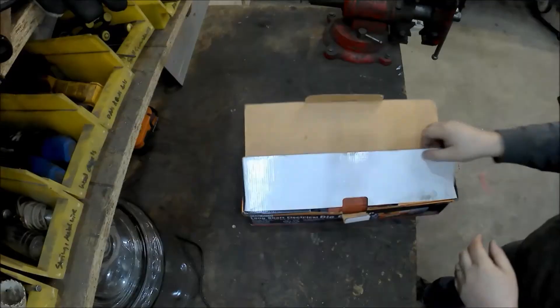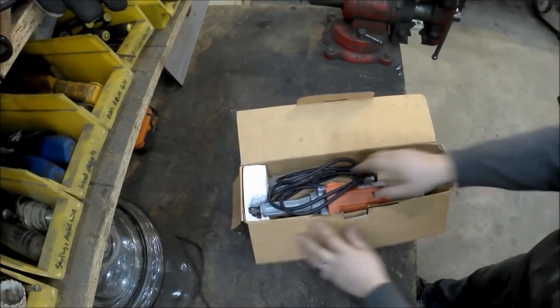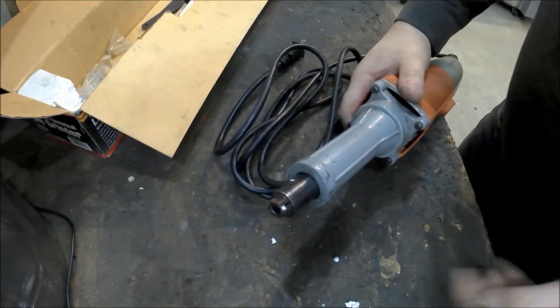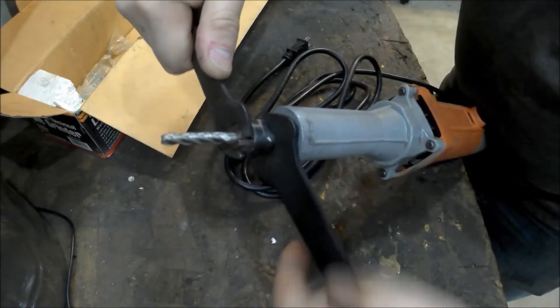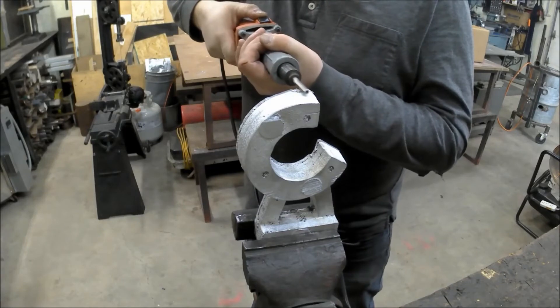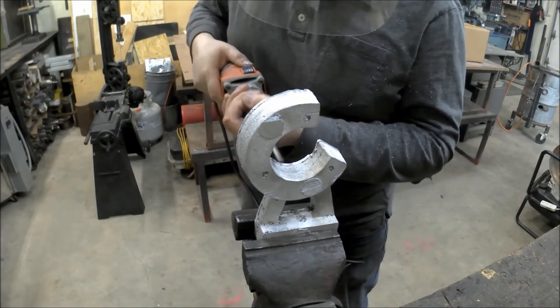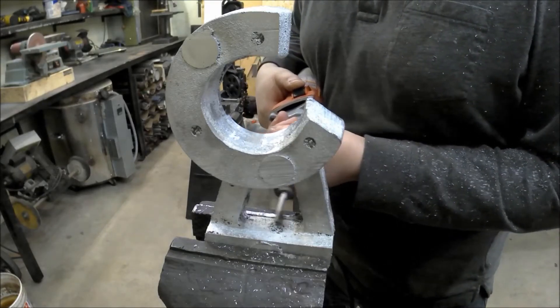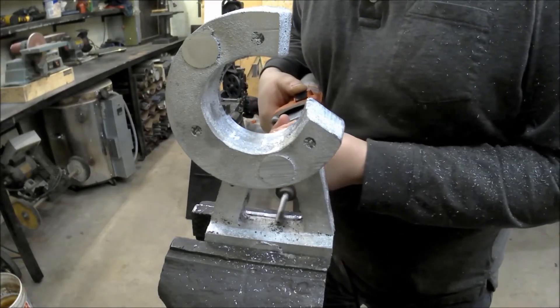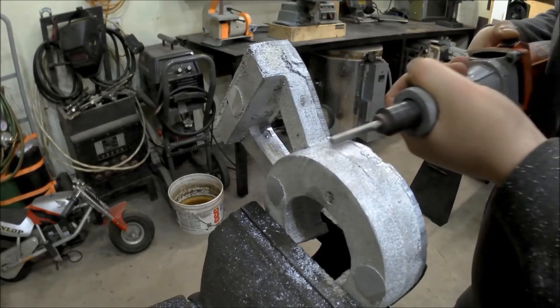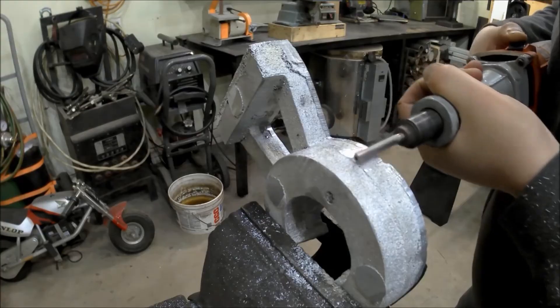Then I used one of those long neck die grinders. For the longest part I used a little metal burr, and it kept clogging up with the aluminum because it's really kind of soft actually. What I found works really well is an end mill, a quarter-inch end mill. Because it spins at about 23,000 RPM, it's probably faster than it should be, but it worked really well. Just don't get your fingers caught in the end mill.